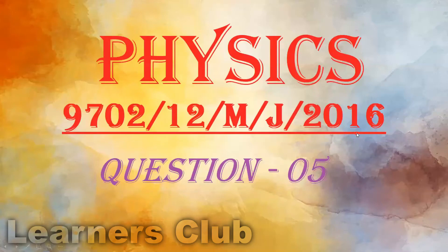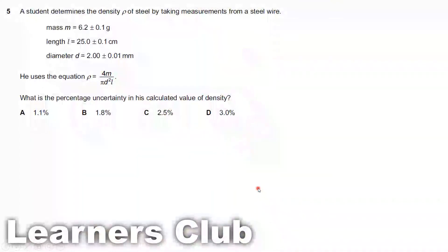Physics major in 2016 question 5. A student determines the density ρ of steel by taking measurements from a steel wire. The measurements of mass, length and diameter are given along with their uncertainties.